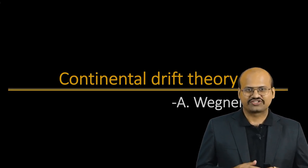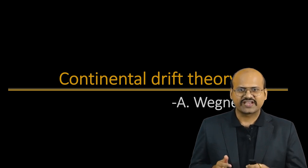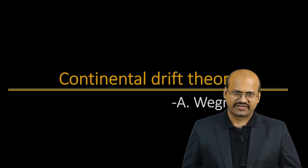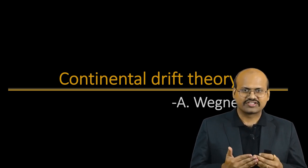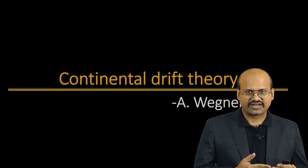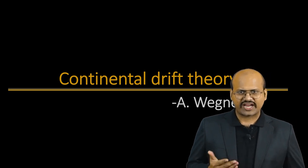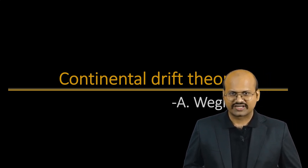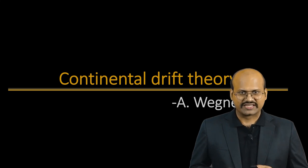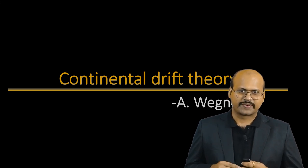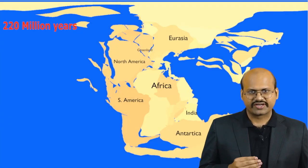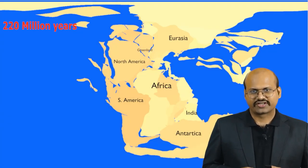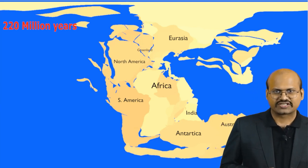Now we have seen the whole list of evidences given by Wegener, but just giving evidences was not sufficient. Wegener had to provide a theory and a mechanism of how this happened and which forces caused this continental drift. In his theory Continental Drift, published in 1912, Wegener suggested that around 200 million years ago all the continents were one single continuous land block. This land block was called Pangaea.